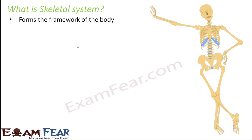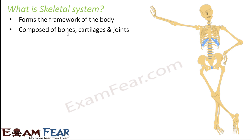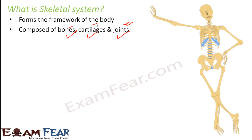So what is the skeletal system? It forms the framework of the body. It is composed of bones, cartilages and joints. All these three things form the skeletal system, and these three things together are responsible for various types of movements in our body. We have already discussed about joints, so now we have to discuss about bones and cartilage.